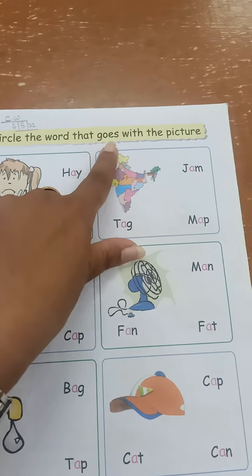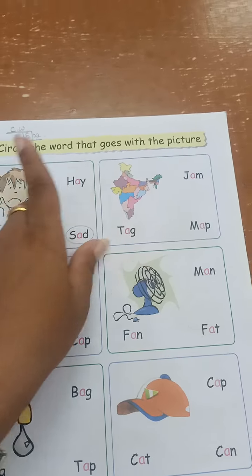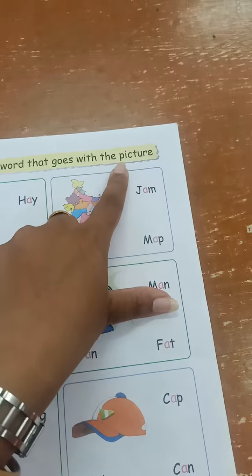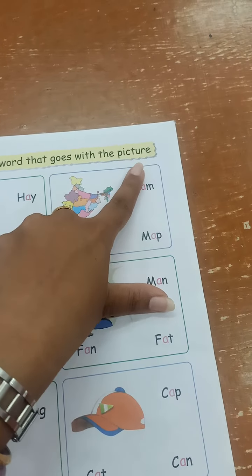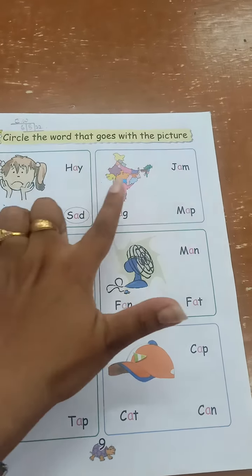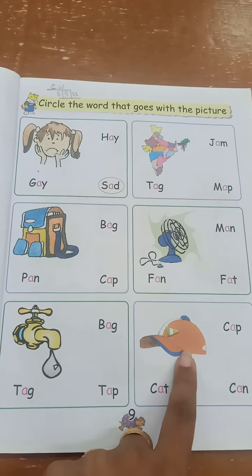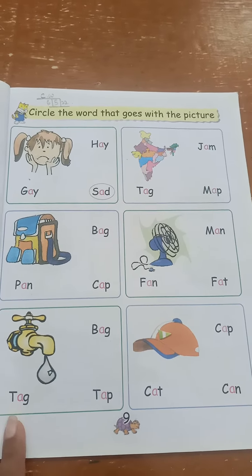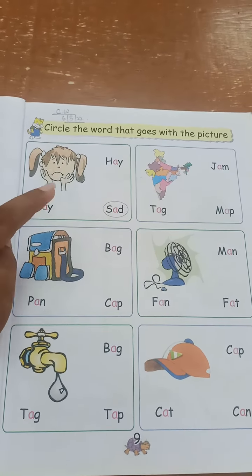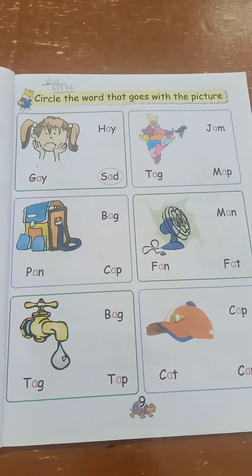Hello children, again we have come back to our English class. Today we are going to do a different thing altogether. So as you can see, this is your English Primer book. We will open the book today to page number 9. We will do this page today. What is written over here? I have written the CW and date on this page. This is the work we are going to do today.